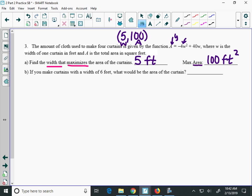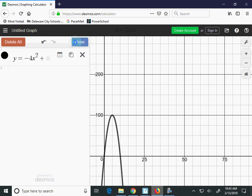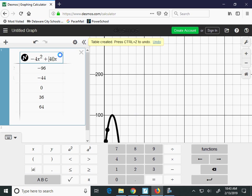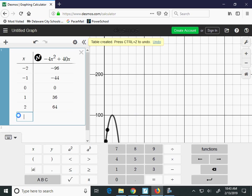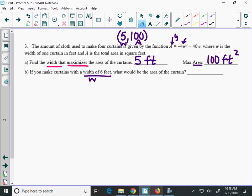Now, finally, it says if you make curtains that have a width of 6 feet, that's your W, what would be the area? Remember, W is acting like the X here. So you're going to put 6 into the equation for W. And the fast way of doing this is to make a table. You're going to go into your table. You're going to put 6 in for X, and it'll tell you that the area that you get if you make the curtains 6 feet wide would be 96 feet. 96 squared.